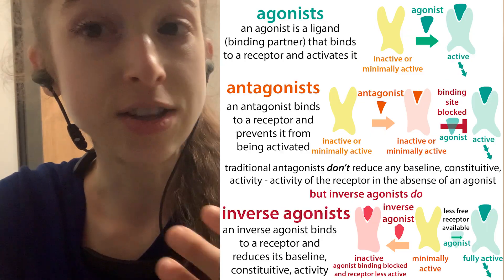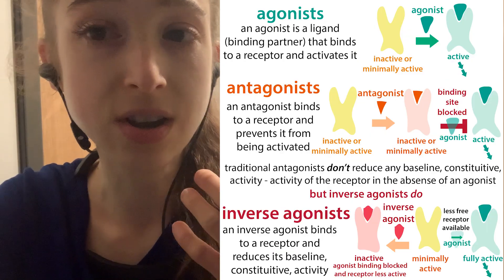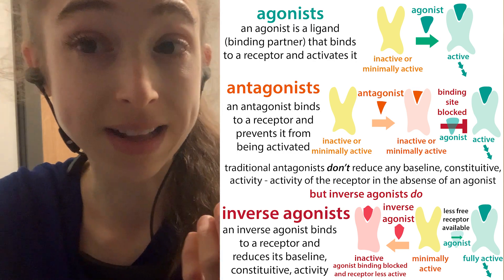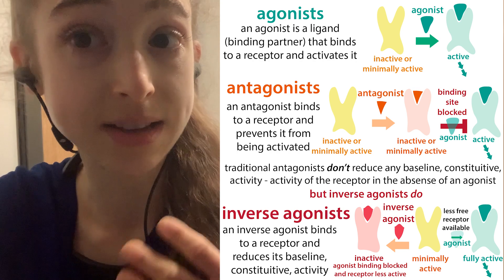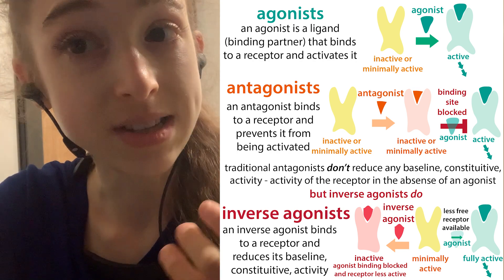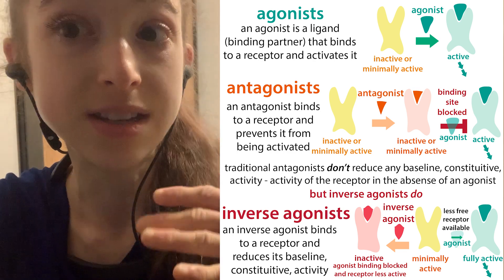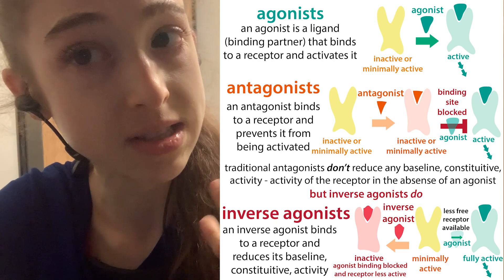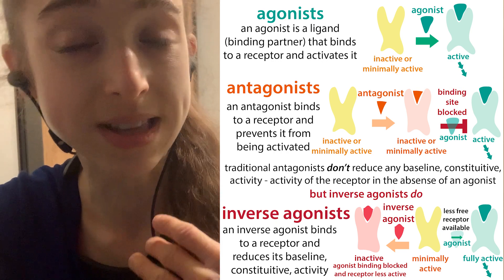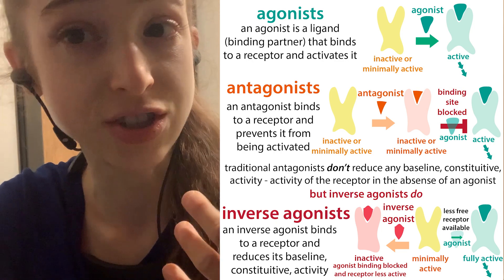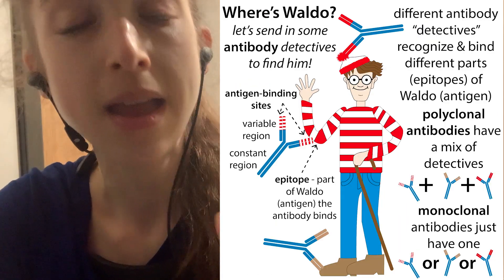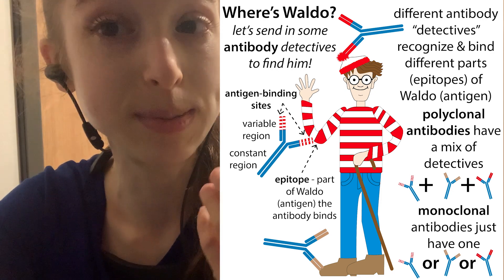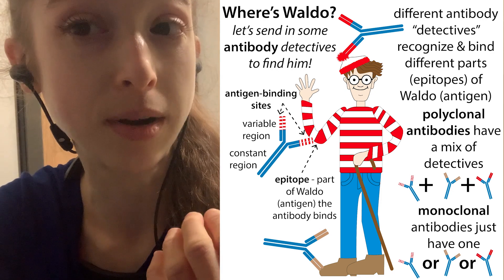In terms of receptors, we classify ligands based on whether they activate or deactivate the receptor. An agonist activates the receptor. An antagonist prevents the receptor from being activated. An inverse agonist lowers the activity of the empty receptor — so if that receptor has constitutive or baseline activity in the absence of an agonist, the inverse agonist can reduce that activity, whereas the antagonist is just preventing it from getting activated.